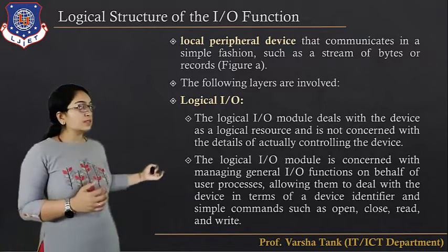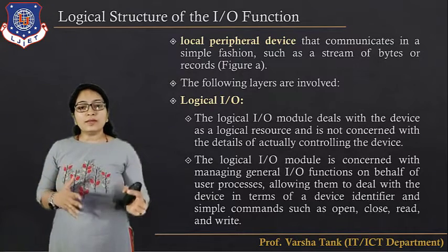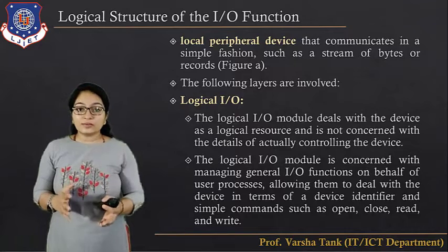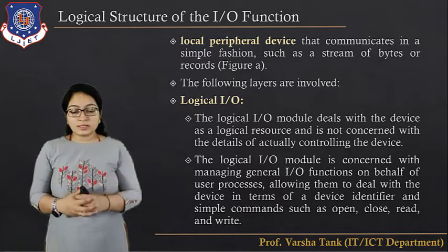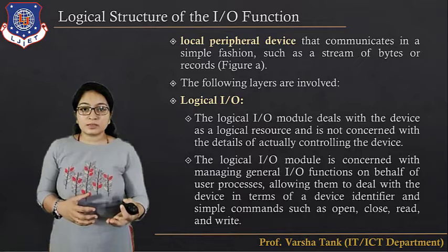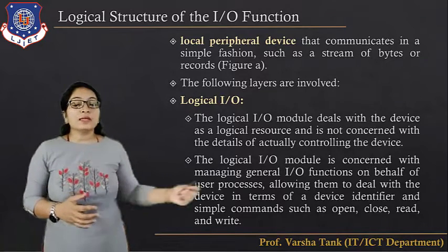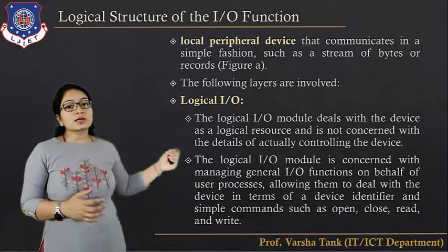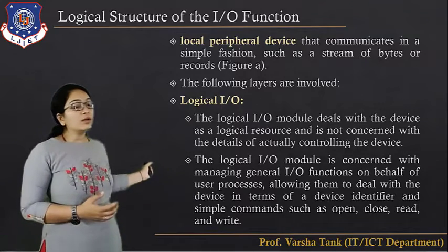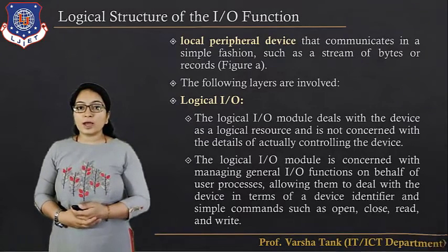The logical IO layer provides commands like open file, close file, read file, and write file. You can use these commands directly when interacting with the file system, for example in Microsoft DOS — disk operating system. When you use these commands, they interact with the logical IO layer.